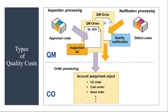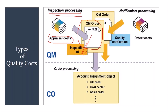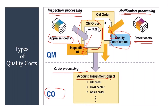So basically you have two types of costs. Appraisal cost — also known as inspection cost — is incurred whenever you do quality inspection of a material or product during inspection processing. Those costs are captured through the QM order, so the inspection lot will contain a QM order. The other type is defect costs: whenever you do quality notification processing, you assign the QM order to the quality notification, the order processing happens, and the finance/controlling team does the settlement. Essentially, what we are discussing is an integration between QM and the Controlling module.